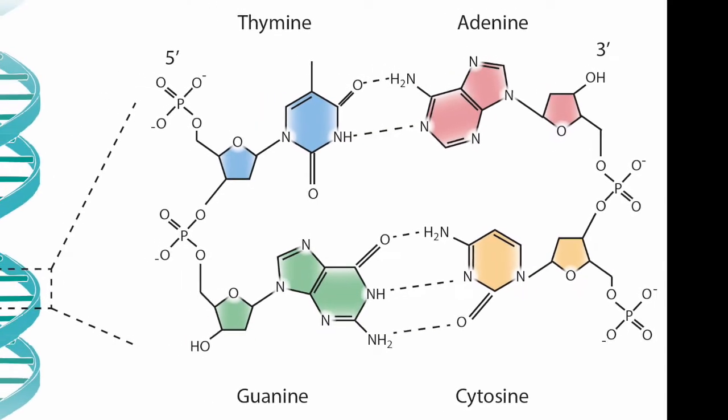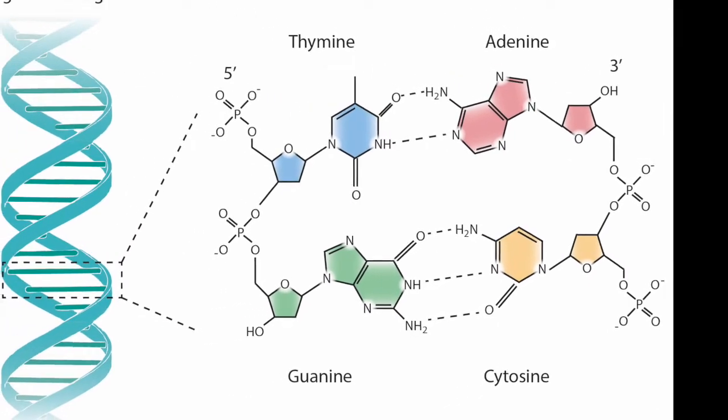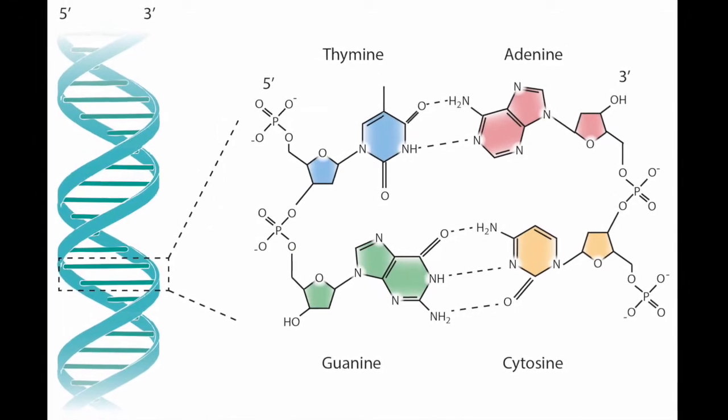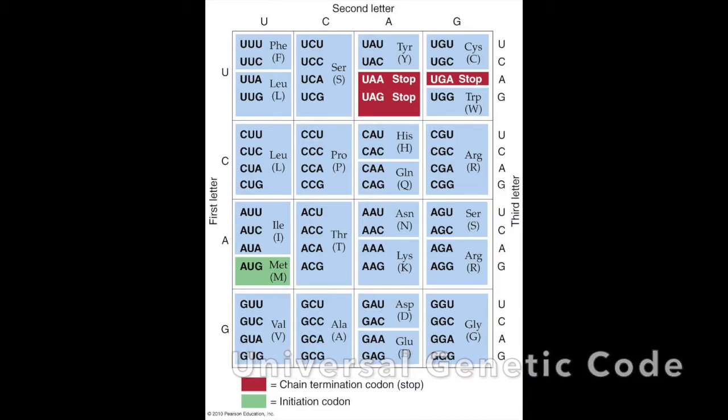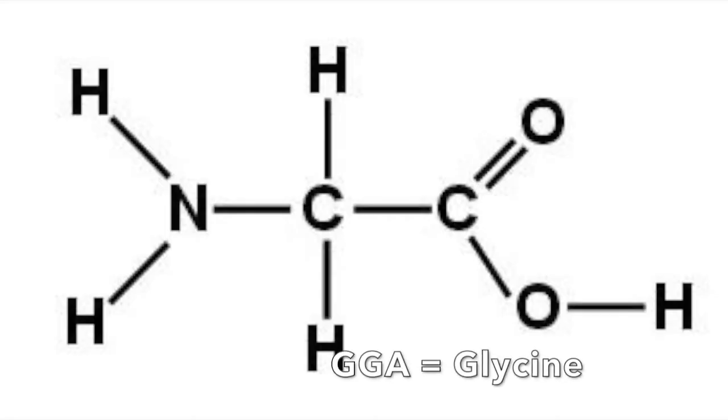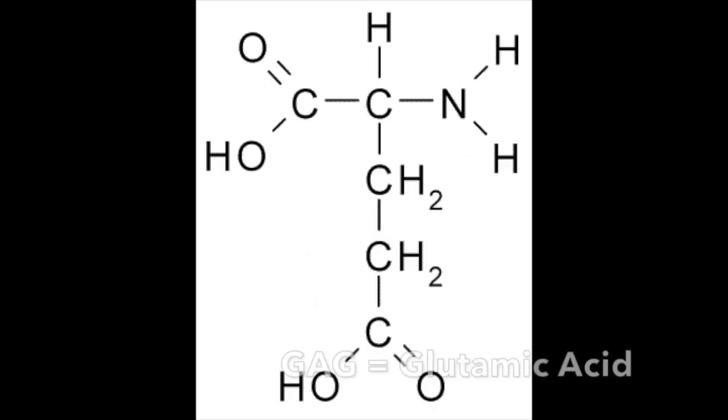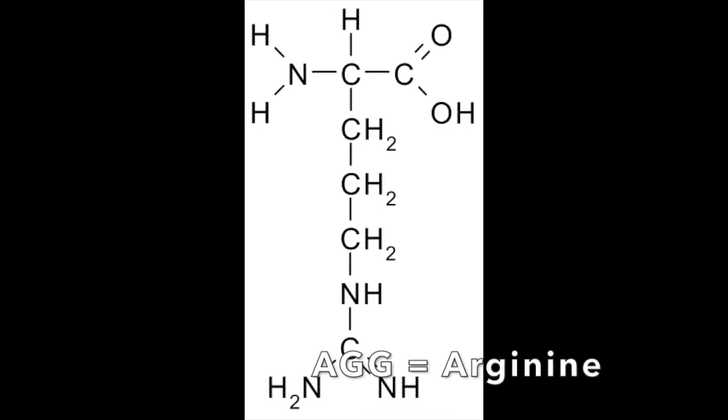DNA stores digital information in quaternary code: A's, T's, C's, and G's. Nearly all organisms utilize what we call the universal genetic code to assemble proteins. In mRNA, the codon GGA encodes for the amino acid glycine, GAG for glutamic acid, and AGG for arginine.